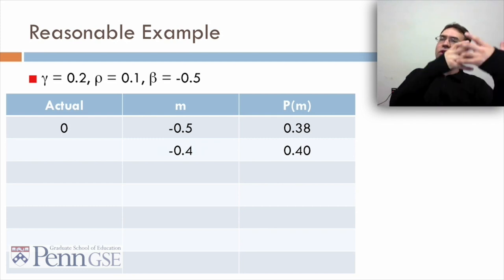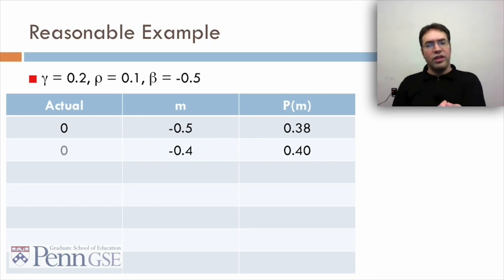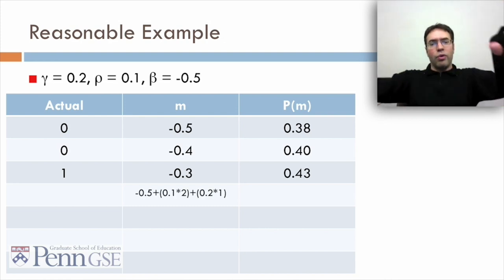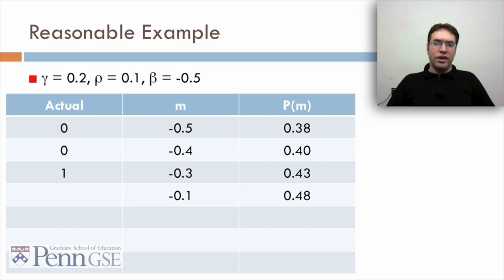Even though they got it wrong, we're saying they still learned more than the evidence of them being wrong told us they won't get it. And in fact, let's say the actual is 0. In this case now, the m will be negative 0.5 plus 0.1 times 2. We've got two failures now that are weighted 0.1 for rho. Negative 0.3 is the result, which gives us a p of m of 0.43. And you can see it's kind of just going up over time.